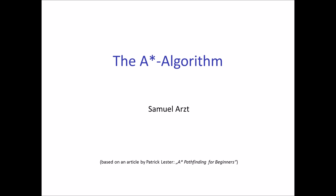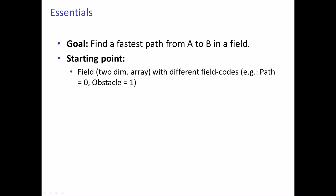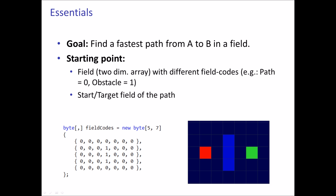So how does the A* algorithm work? First some essentials. The goal of the algorithm is to find the fastest path from A to B in a field. So we start out with a field, which is just a two-dimensional array filled with different field codes. For example, path is equal to zero and obstacles are equal to one. We also know the start and target field of the path. In field form, empty fields are visualized in dark blue, obstacles in brighter blue, the start field is red, and the target field is green.